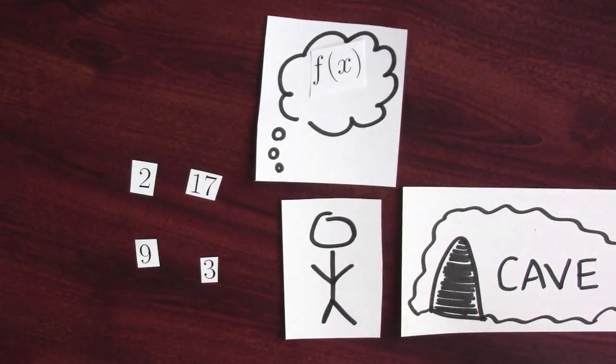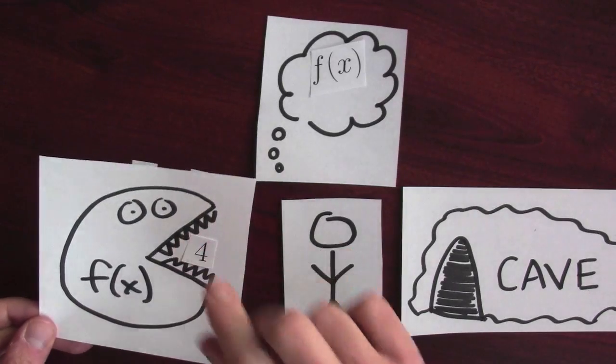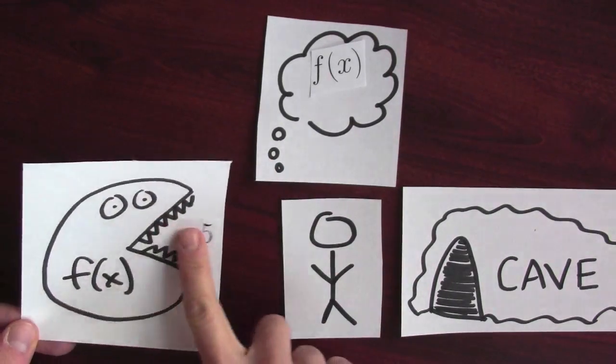There's another way to think about functions. A different metaphor is that functions eat numbers and after they're done processing them, they spit out some other number. Functions eat numbers and spit out numbers.